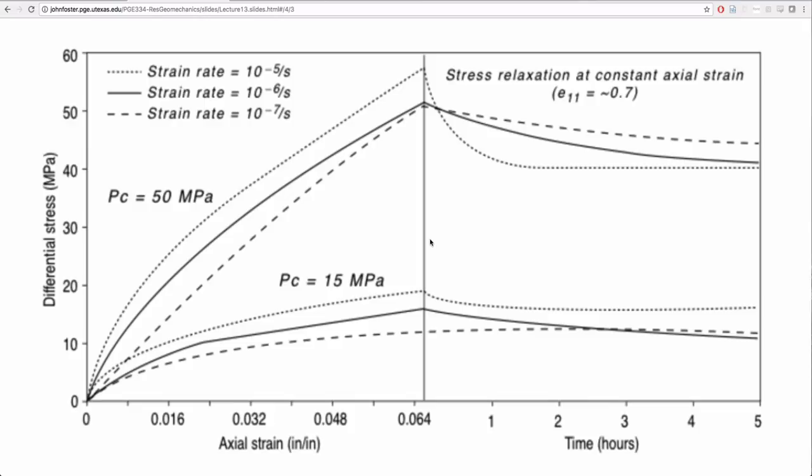So I used to work in impact mechanics, like car crashes. The strain rate in those events is 10 to the third, eight orders of magnitude higher than that. And so these curves are way over here. The material's much stronger at those type of strain rates.